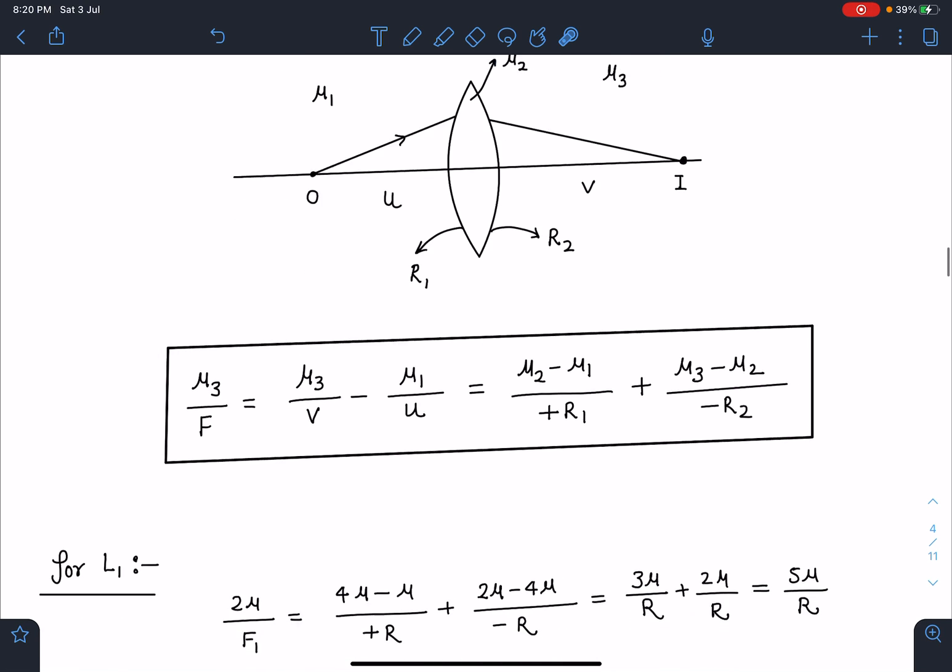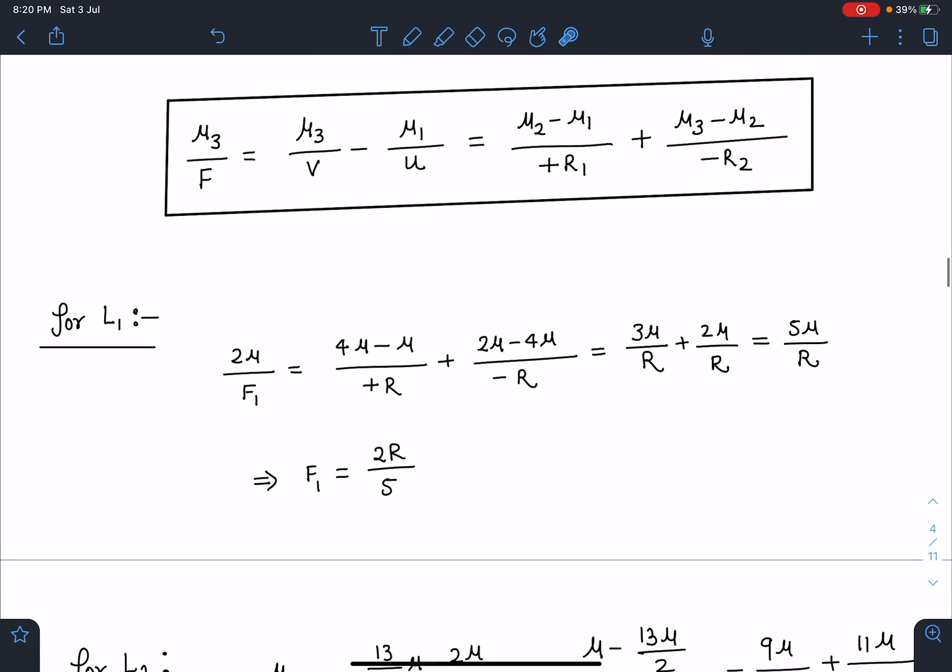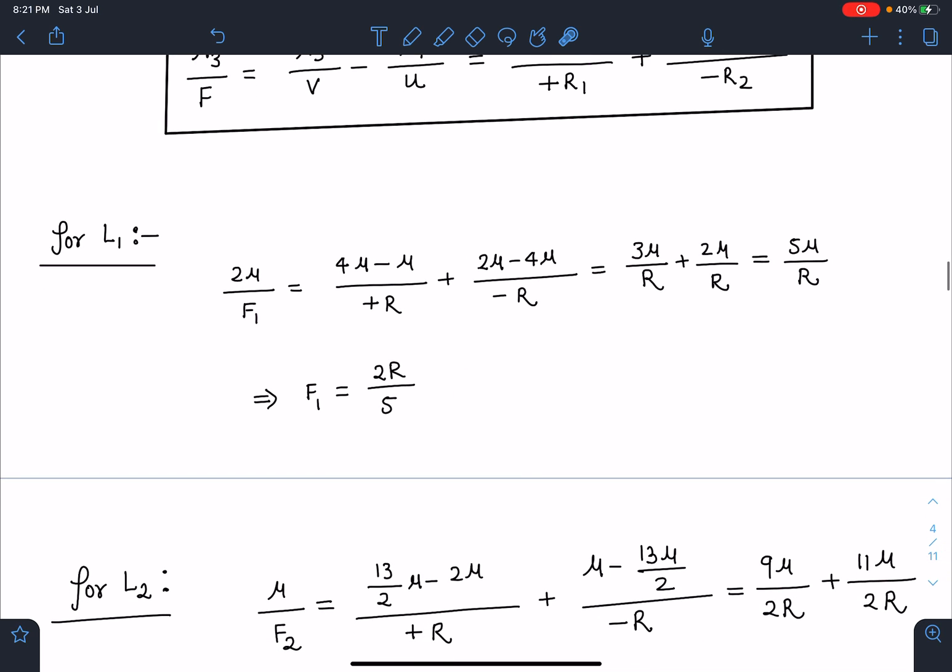For lens one, if I try to calculate its effective focal length: 2μ the middle medium, and (4μ - μ)/R + (2μ - 4μ)/(-R), so when I simplify this I get f₁ = 2R/5. We can see the beam is parallel to the principal axis here, so it will be converging at a distance of +2R/5. Its focal length is 2R/5.